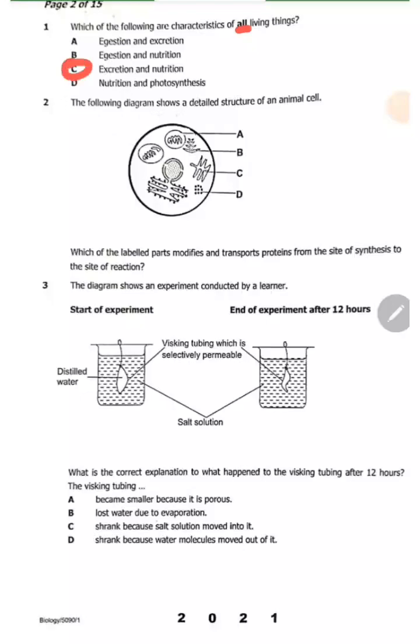The following diagram shows a detailed structure of an animal cell: A, B, C, D. Which of the labeled parts modifies and transports proteins from the site of synthesis? Whenever they talk of proteins, you must start talking of the ribosomes.